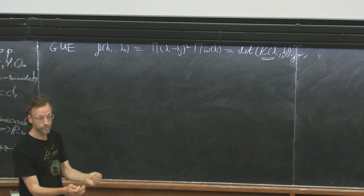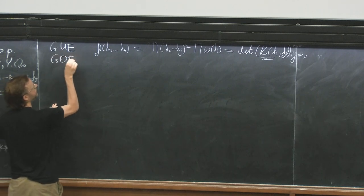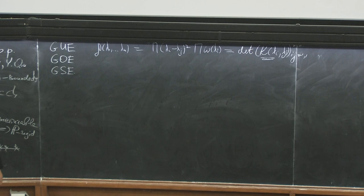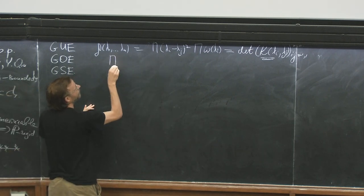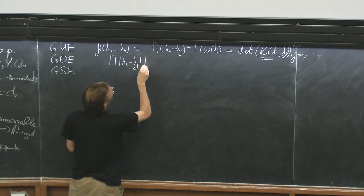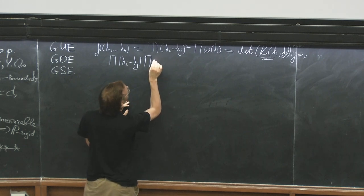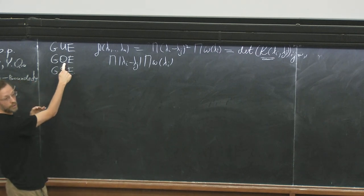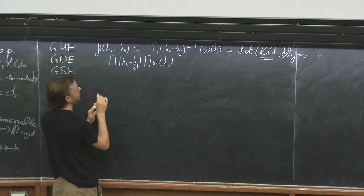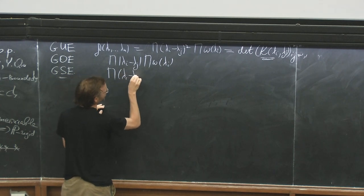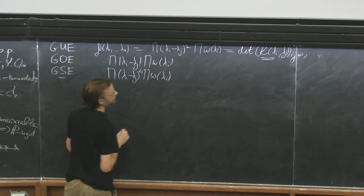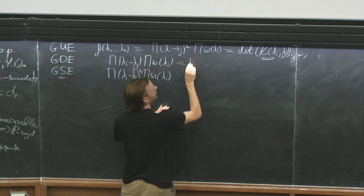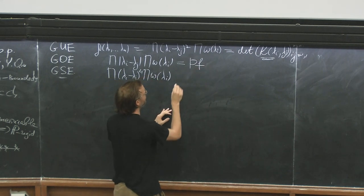Now if I want to move forward, I can consider GOE — Gaussian orthogonal ensemble — or GSE, Gaussian symplectic ensemble. In this case, what I have here will be the product of the modulus times the weight. In the symplectic case, when we have quaternionic matrices, I will have the product of the fourth powers. It turns out that we can rewrite it not as a determinant, but as a Pfaffian. I will recall what a Pfaffian is in several minutes.